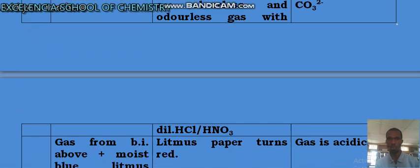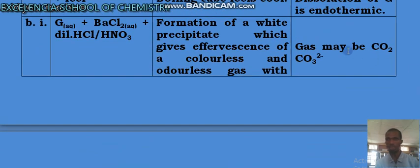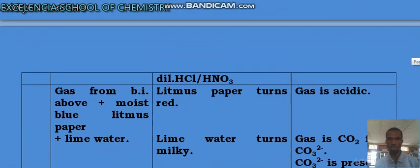Odorless gas with dilute mineral acid. Of course, the inference is gas may be CO₂ from CO₃²⁻. That is a suspicion. That is a suspicion. And we continue.